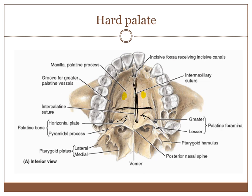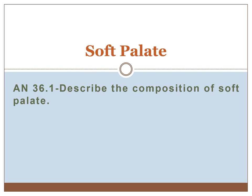The anterior part of the suture is the intermaxillary suture, the posterior part is the interpalatine suture, and between the maxilla and palate is the palatomaxillary suture. Coming to the soft palate, the competency is 36.1, where you should know how to describe the composition of the soft palate.